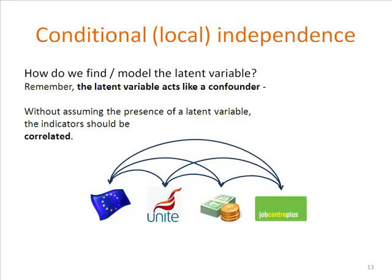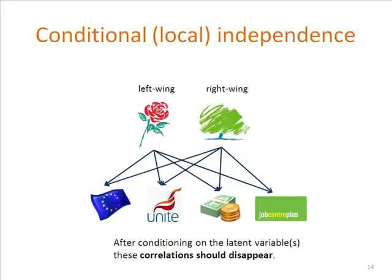One important concept I'm going to talk about is local or conditional independence. What tends to unite different latent variable models — or at least is common in the way they're formulated — is how you recognise one when you've found one. The starting point is finding some stuff that's correlated. These political issues, for example: all these things are correlated. What we're hoping for is that when we assume the presence of the latent variable, those correlations should disappear. This is the situation of conditional independence between the indicators conditional upon the latent variables. If we assume the presence of the latent variables, the residual correlations should in effect disappear or become non-significant. This is called the local independence condition.